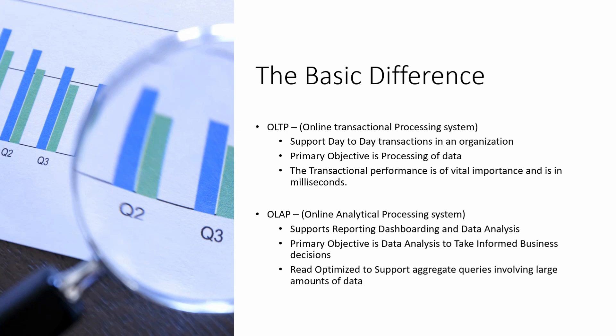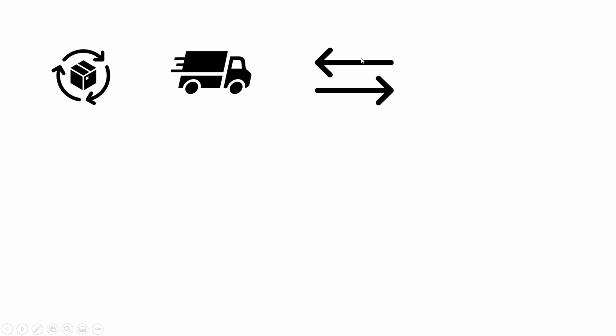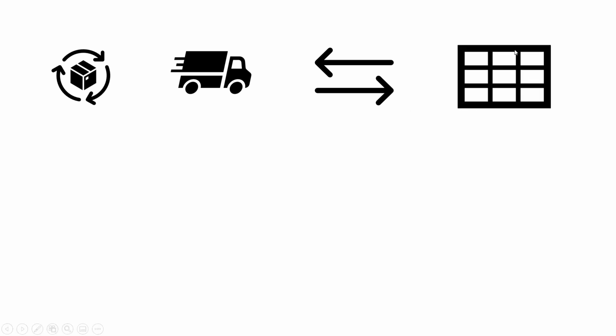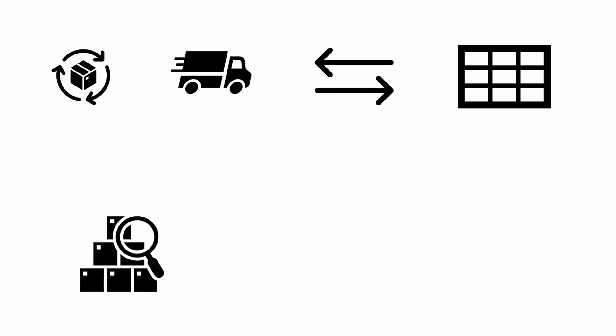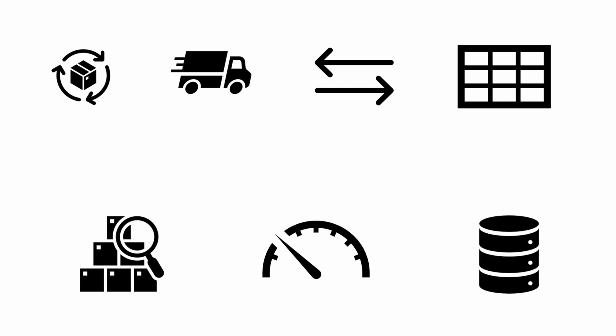OLTP supports transactional processing. For example, you requested a product from the supplier and the shipment arrived — the arrival of that shipment is one transaction. That's the purpose of an OLTP system: insert one row in the database as soon as the shipment arrives. Decisions like which product to order or which product is moving slow — that logical decision-making happens in an OLAP system.